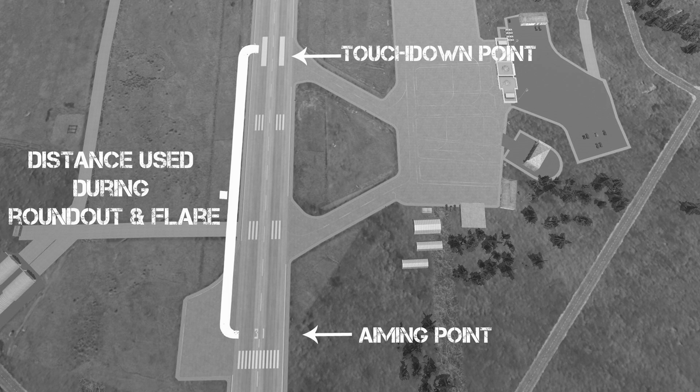On final, we fly at approach airspeed towards the aiming point by adjusting pitch and power. This aiming point is where the plane crashes if you don't round out and flare. The round out and flare slows down your airspeed and descent rate to achieve a soft landing, requiring a certain distance depending on your approach airspeed. When you're slow enough and in a landing attitude, you will land on the touchdown point. If your airspeed or descent rate is too fast, you will bounce off the runway at the touchdown point.